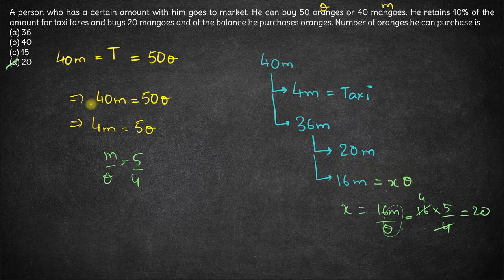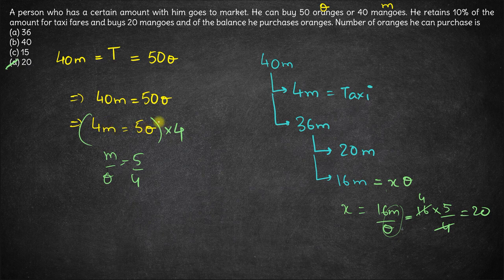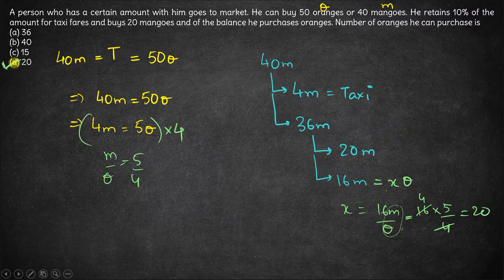Basically what we have is the price of 16 mangoes is same as the price of 20 oranges, which could have been obtained by multiplying this with 4. 16M would equal 20O, that means 16 mangoes are equivalent to 20 oranges. So he could have bought 20 oranges with the remaining amount. Thank you.